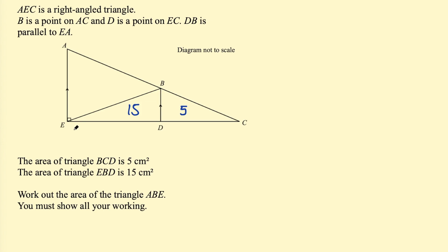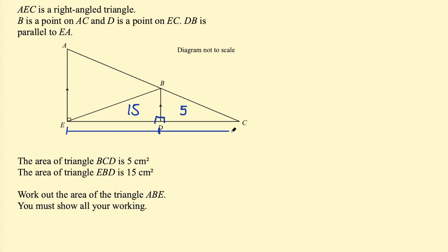The key thing to identify is that these two triangles have the same height and they are right triangles — because these lines are parallel and this is a 90-degree angle. With the same height, we can say something about their bases. For area 15 to be three times greater than area 5, the base ED must be three times greater than DC. So if DC = k, then ED = 3k.